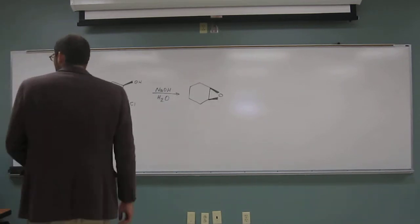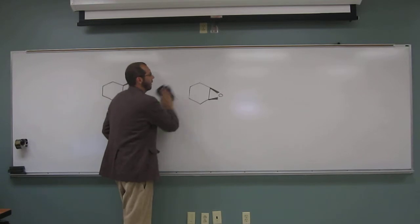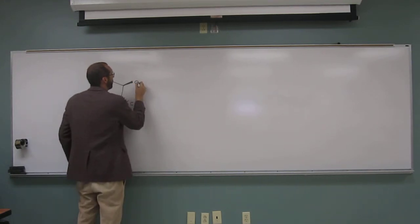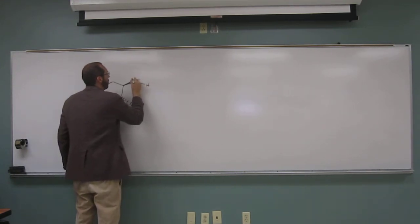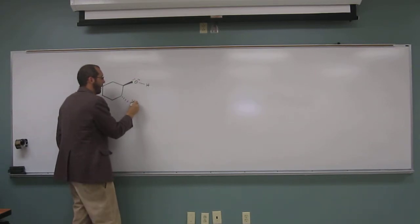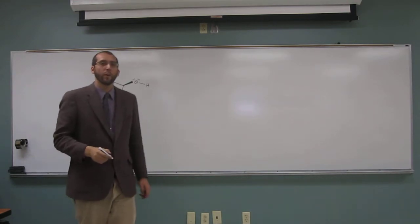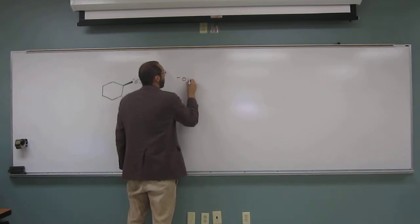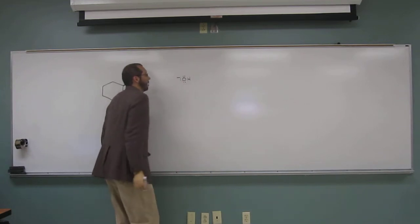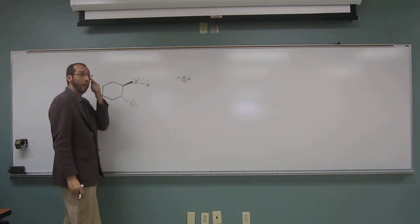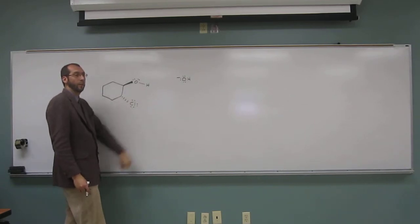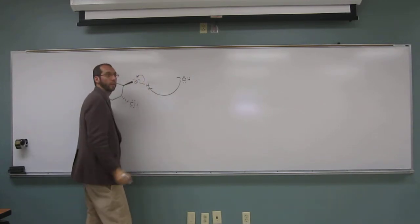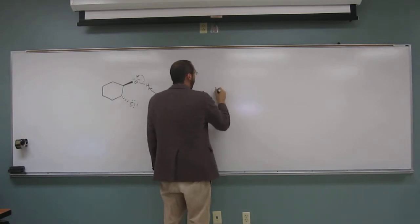So remember, sodium hydroxide—we're going to do the mechanism by the way, so I'm going to erase everything. When we put that into water, the sodium just becomes a spectator ion, and the hydroxide becomes the active Bronsted base. We got that hydroxide looking for an acidic proton. Hopefully you see the acidic proton right there. The first step of the mechanism: we make the alkoxide.